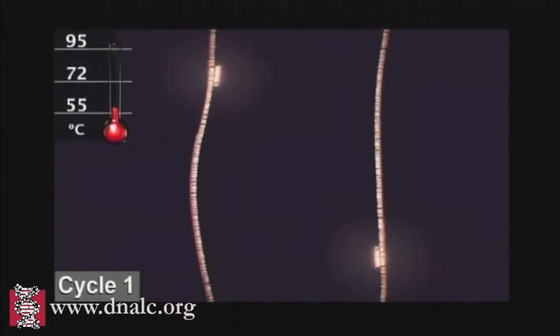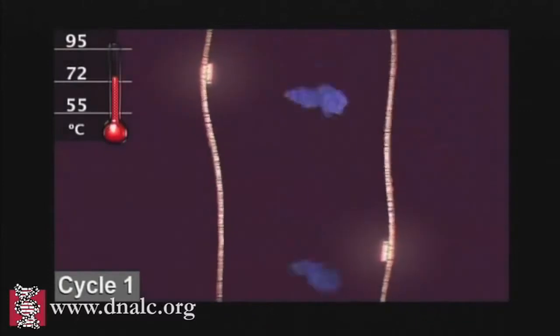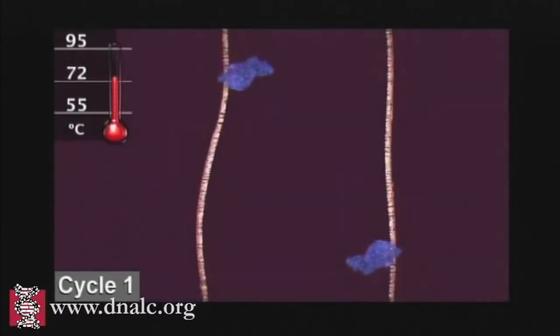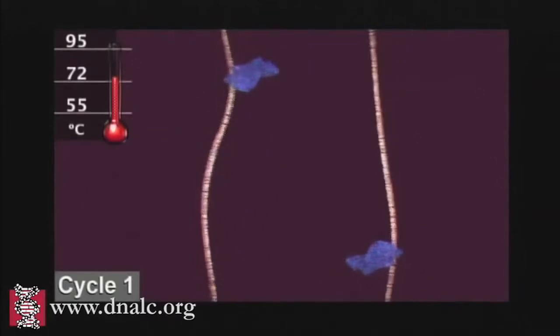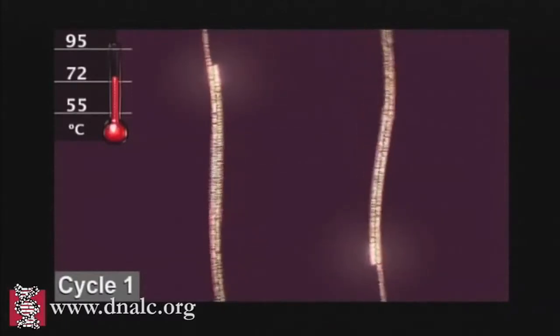The primers bracket the target sequence to be copied. At a slightly higher temperature, the enzyme TAC polymerase, shown here in blue, binds to the primed sequences and adds nucleotides to extend the second strand. This completes the first cycle.